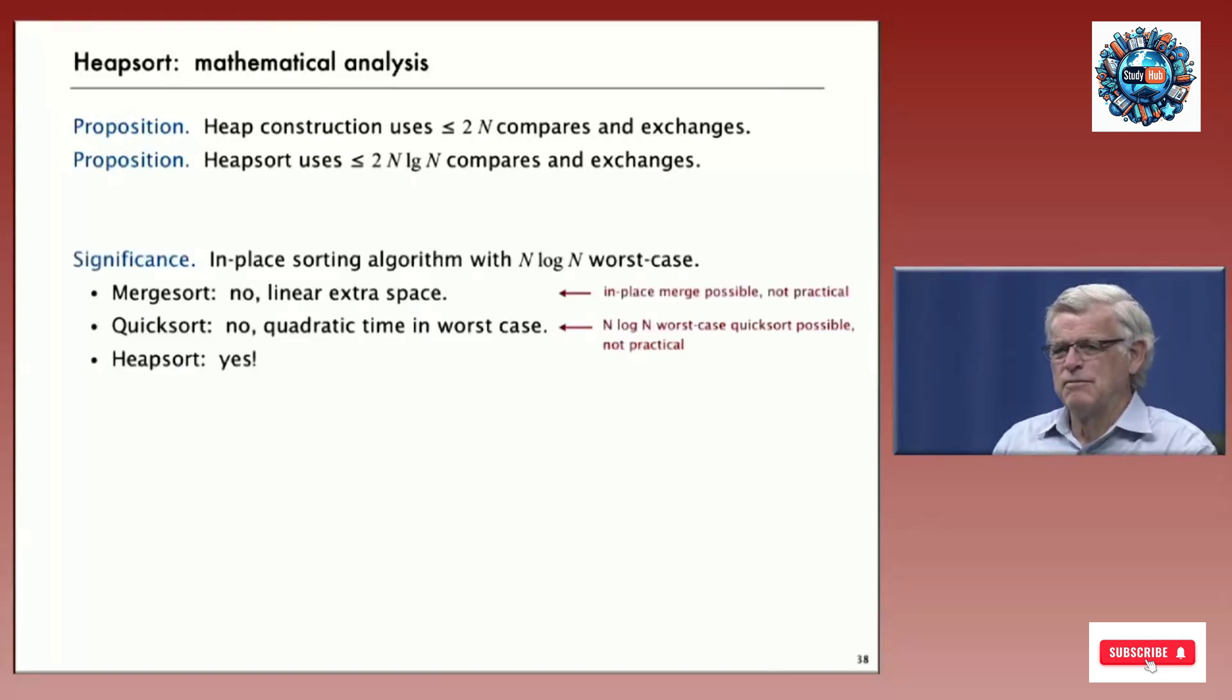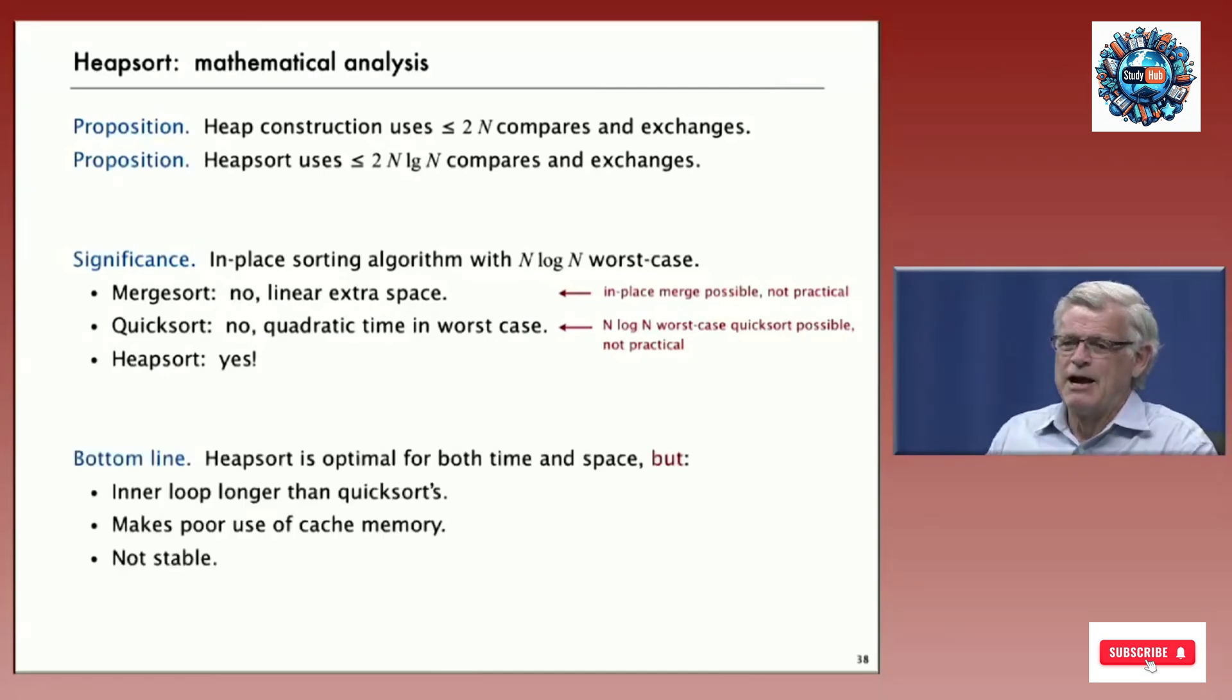And that's significant, significant because it's the first sorting algorithm that we've seen that is both in place and manages to get the sorting job done with guaranteed n log n compares. Merge sort doesn't do that. It takes linear extra space. Quick sort doesn't do that. It takes quadratic time in the worst case, even though we make that unlikely by random shuffling. It still takes quadratic time in the worst case. But heap sort does both. Now, there's more complicated versions of merge sort and quick sort that can do this in theory. But heap sort is a pretty simple algorithm that gets both done. So, if on a job interview, somebody asks you, what's an in-place sorting algorithm that's guaranteed n log n, your answer is going to be heap sort.